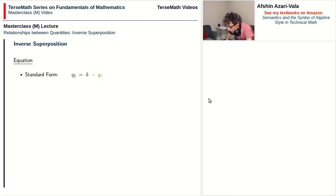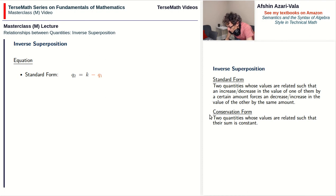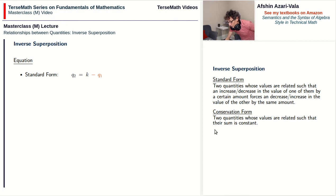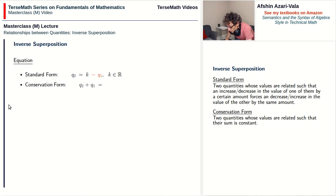There is another form for inverse superposition problems — the conservation form. This form says that there are two quantities whose values are related such that their sum is constant. If you add their values, you always end up with a fixed amount. If one gains two, the other loses two, so in total they don't lose anything. Imagine you have some money in your left pocket and some money in your right pocket. If you take some money from your left pocket and put it in your right pocket, in total you haven't changed the total amount of money you have. So the sum of the values of the two quantities is constant. We can write this as: q2 plus q1 is equal to k.